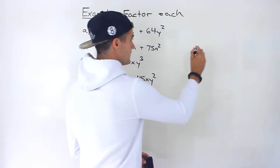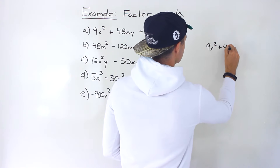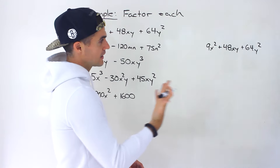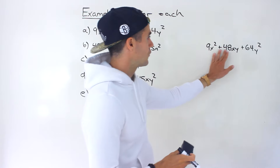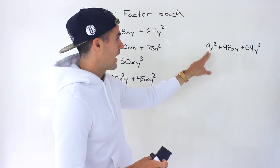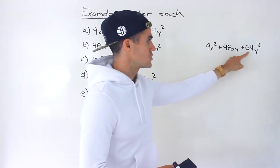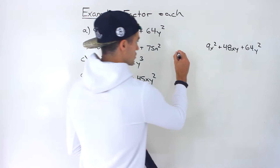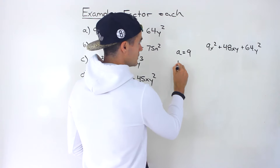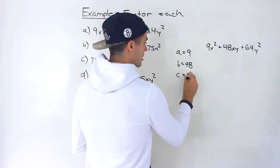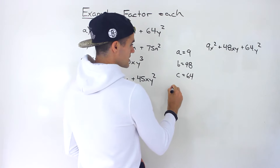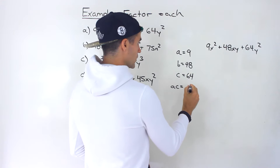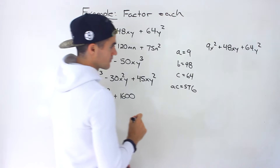Starting with part A, we have 9x² + 48xy + 64y². First thing we want to check: can we take anything out? Notice between the 9, 48, and 64, we can't take anything out. And the variables — there are x variables in two expressions but not the third, and y variables in two but not the first. So let's go into decomposition. The a value is 9, the b value is 48, and the c value is 64. The ac value is 9 times 64, which gives us 576.